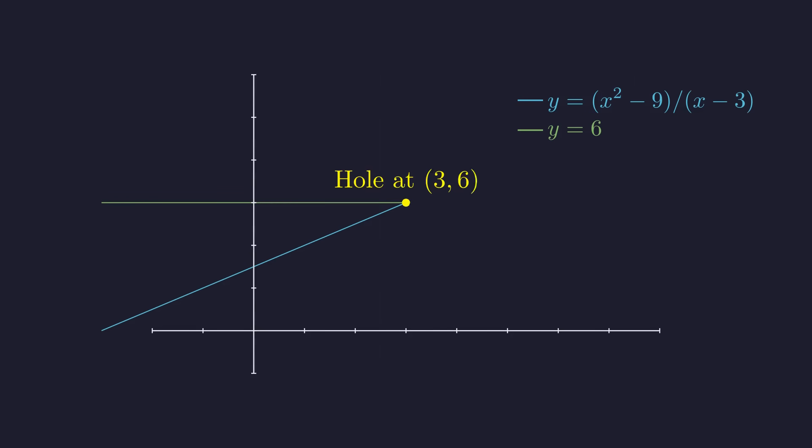But here's the thing, x can't be 3, remember? So there's actually a hole in the blue line right at the point where x = 3. The function literally doesn't exist at that spot.